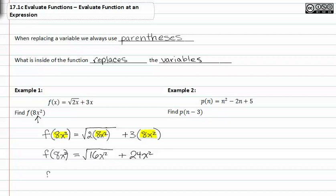We can simplify this further. Square root of 16x² is 4x plus 24x². At this point we're done because there's nothing else we can do to simplify it further.